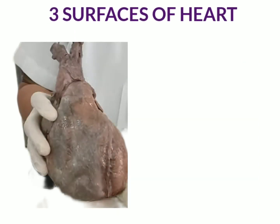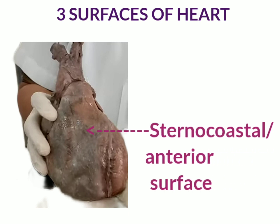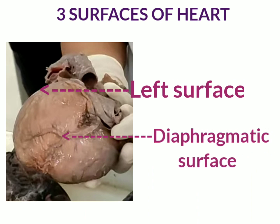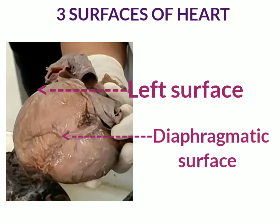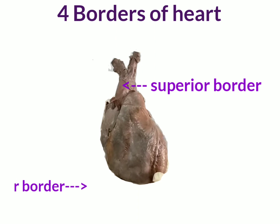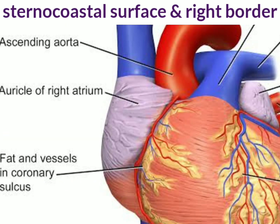There are totally three surfaces and four borders of the heart. The three surfaces are the sternocostal or anterior surface, diaphragmatic surface, and the left surface. The four borders are the superior, inferior, left, and right borders. The right atrium lies on the sternocostal surface and at the right border.